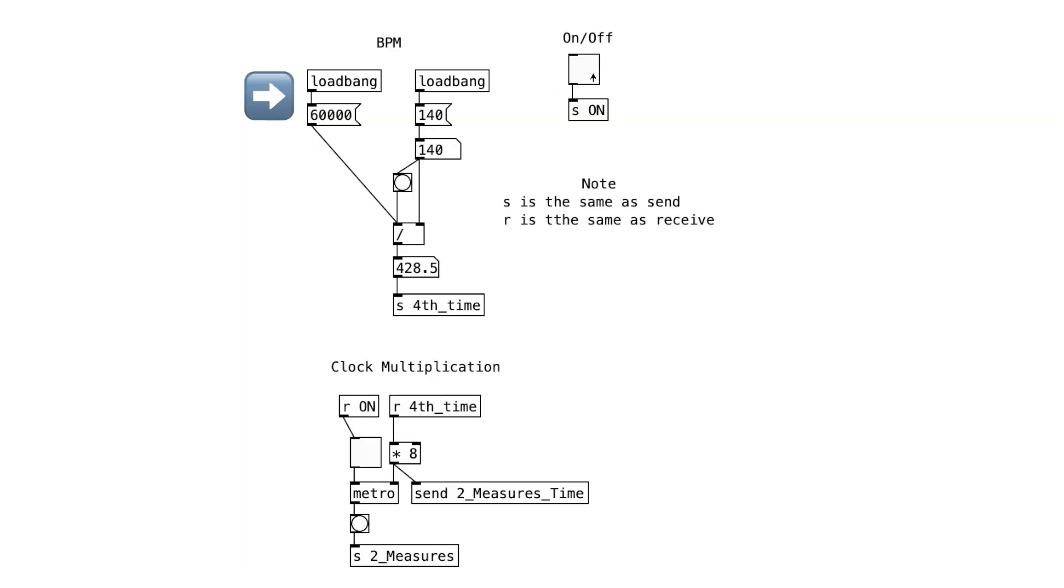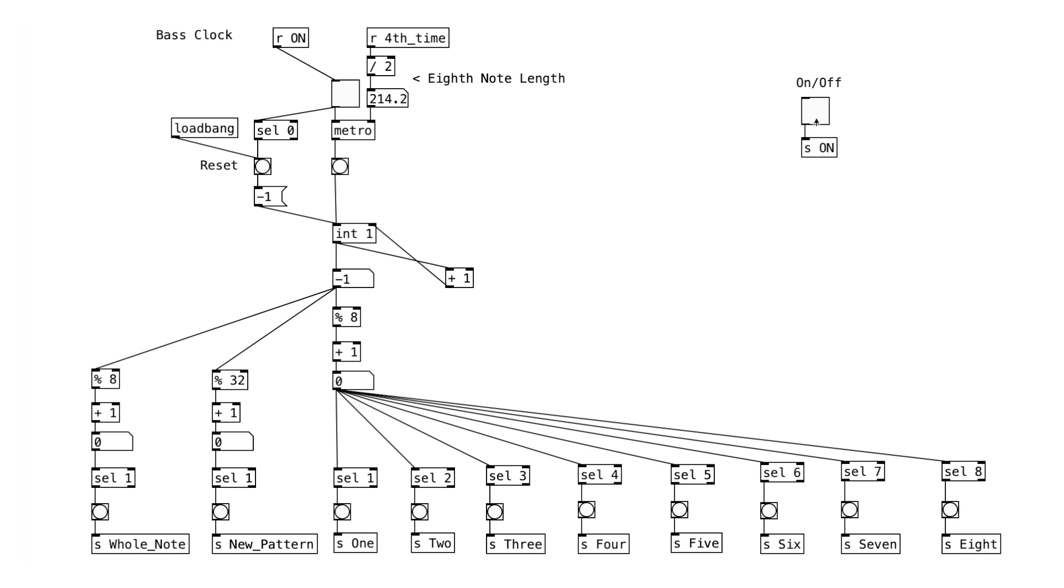We have the BPM here, and we'll set it as 140 for now. Here's the on-off toggle. Clock multiplication to get the length of time of two measures, which will be used for the ambient layer.